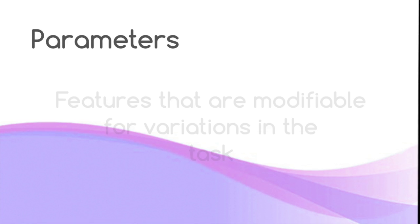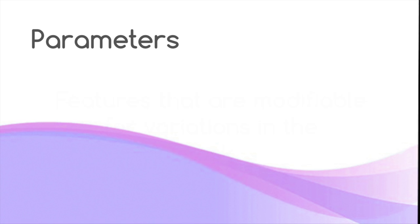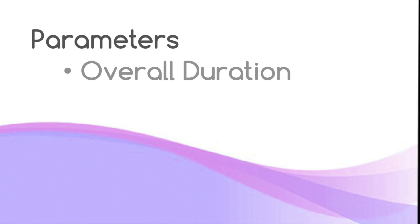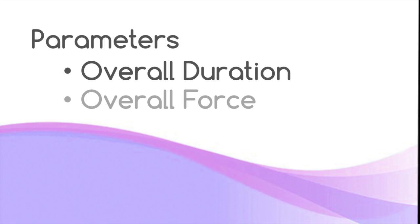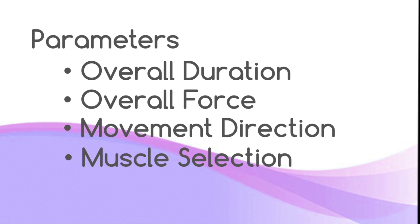The parameters, on the other hand, are features that are modifiable for variations in the task. The four parameters are overall duration, overall force, movement direction, and muscle selection.